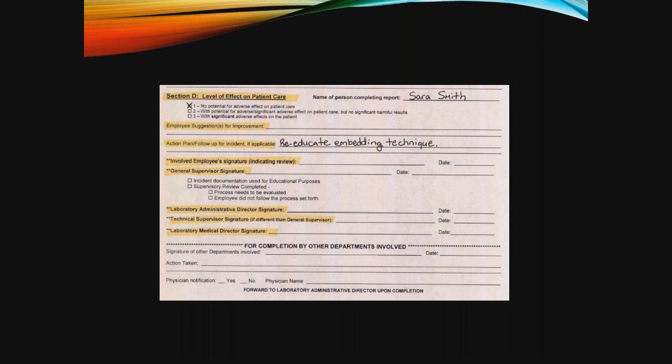The employee is asked to sign the document indicating their review — not necessarily their agreement that the incident is being documented in a punitive way, but more an opportunity to review it, indicate their review, and give us feedback. In the event they decide they don't want to sign, we still keep that in our normal documentation process. The histology general supervisor also signs and documents their corrective action or action plan for the incident, and then the entire document is reviewed and signed by the laboratory director, technical supervisor, and the medical director.